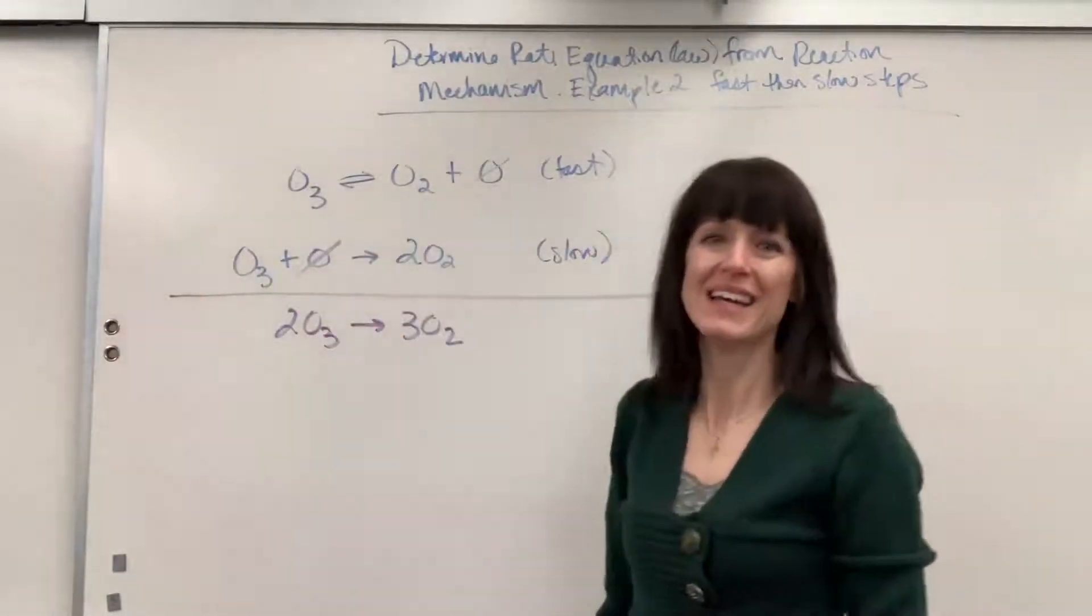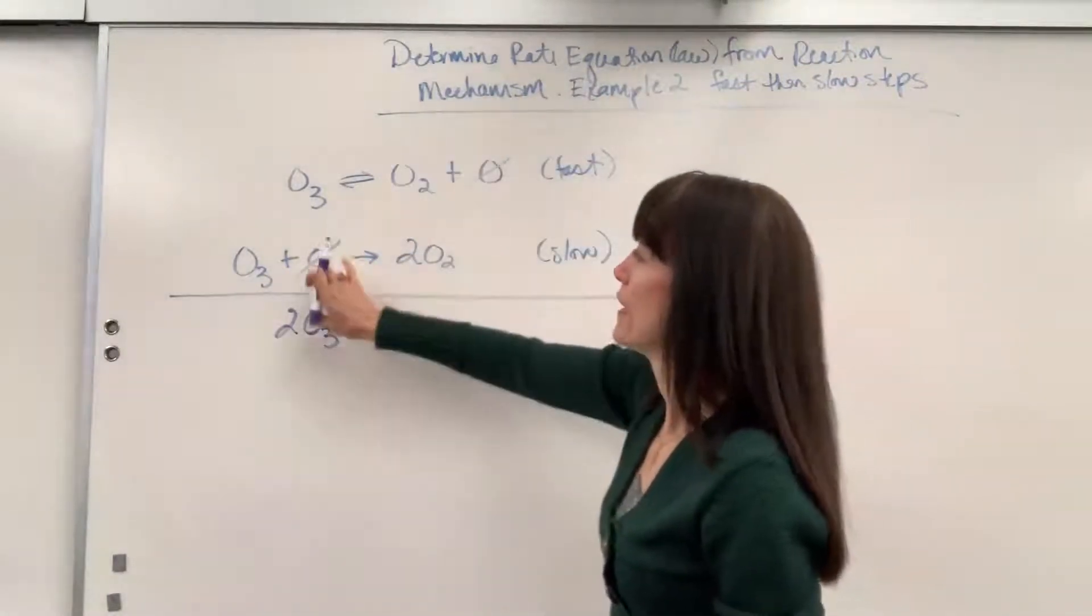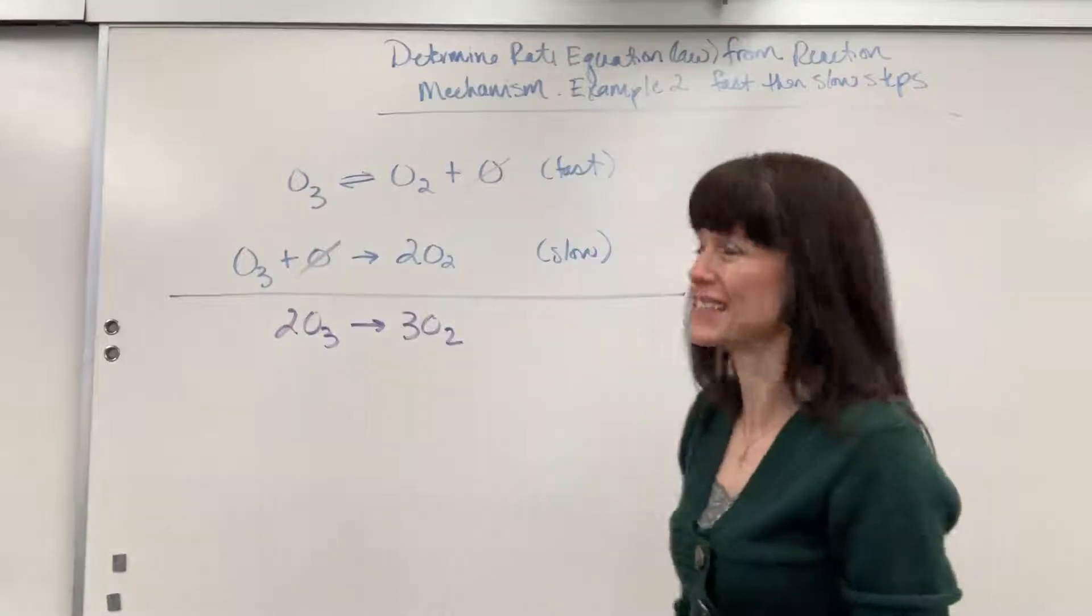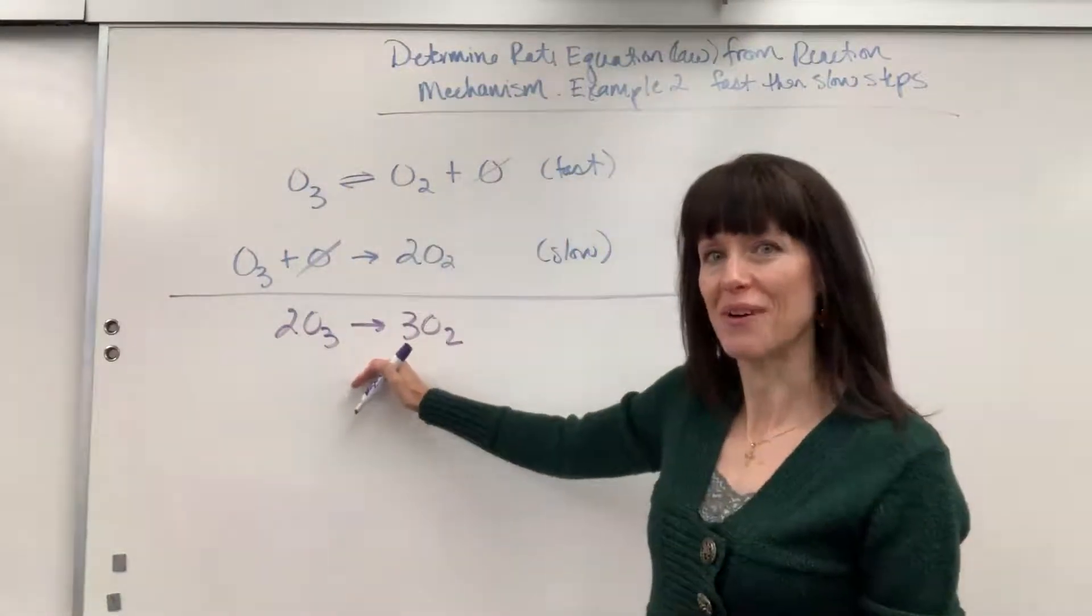Remember, these are called an intermediate. An intermediate is a product is formed and then it's going to be consumed as a reactant. An intermediate is not seen in the overall reaction.